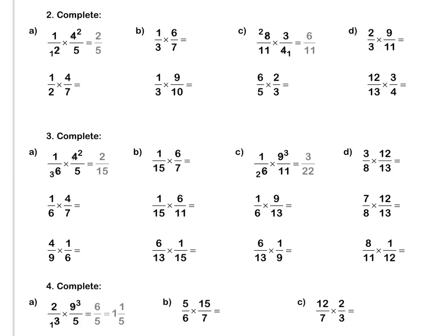Press pause to complete questions A and B by yourself. Question C: in this example, we have simplified the 4 and the 8 by dividing both by 4, so we get 1, and 8 divided by 4 is 2. Multiply out to get the final answer. Press pause to complete questions C and D by yourself.